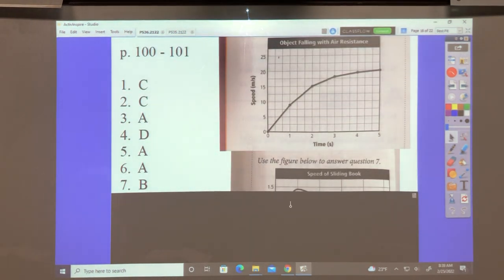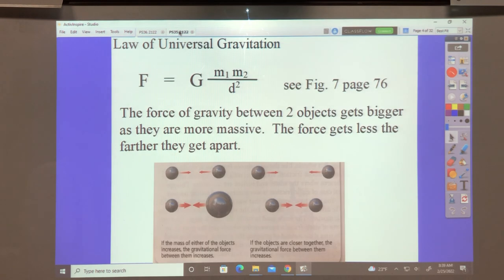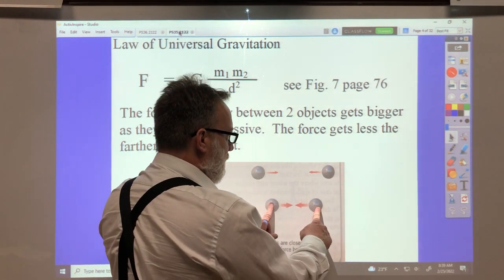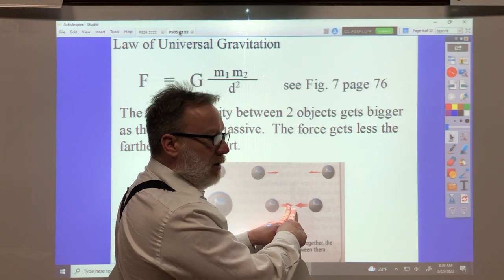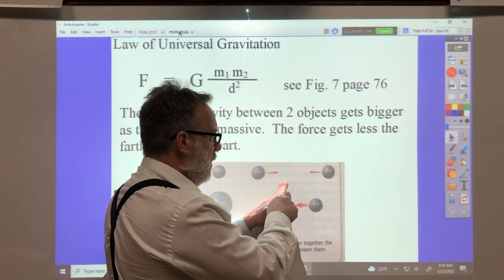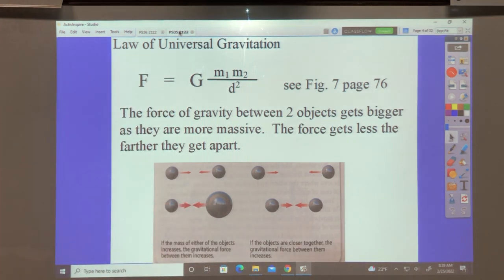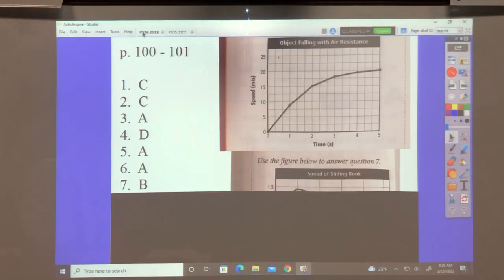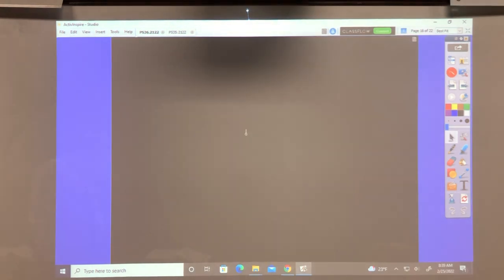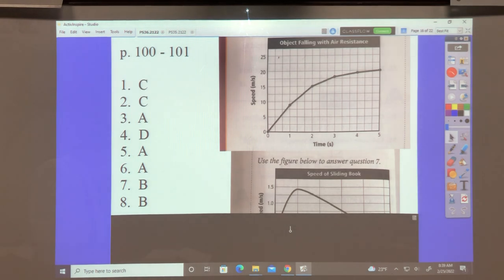Number eight. How does the gravitational force change as two objects move farther apart? We're back to here again. Well, if they get closer together, the gravity is more between them. So it must be that as we move them apart, the gravity gets less between them. And so whatever option that is, it decreases. 8B, it decreases.